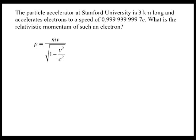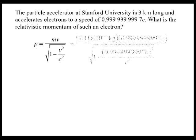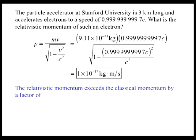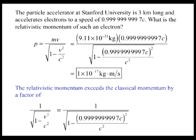We start with the relativistic momentum equation and plug in the speed and the mass of the electron, giving a value of 1 times 10 to the negative 17 kilogram times meter per second. Therefore, the relativistic momentum exceeds the classical momentum by a factor of 1 divided by the square root of 1 minus v squared divided by c squared, which in this case is equal to 4 times 10 to the fourth, or by a factor of 40,000.